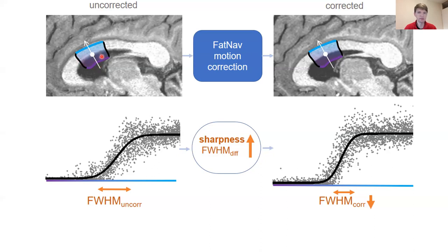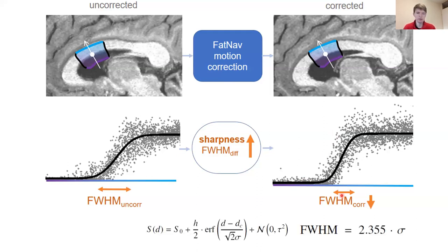We model the intensity at the transition boundary over this region of interest using error functions — sigmoid-shaped functions that show this boundary. After correction, we expect this boundary to be sharper, so that if we measure the full width at half maximum of this function it would reduce, providing a metric for increased sharpness in our image. By using error function parameterization we maintain this in physical units in millimeters, allowing us to relate it to the resolution of the acquired data.